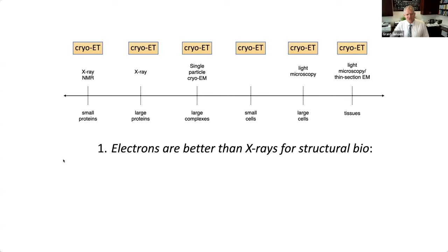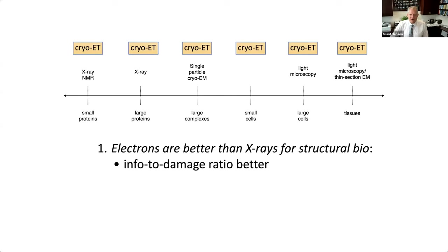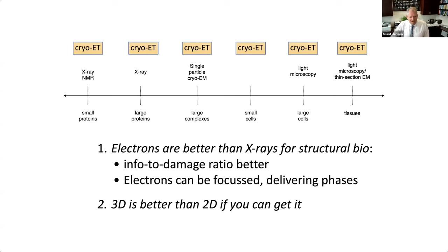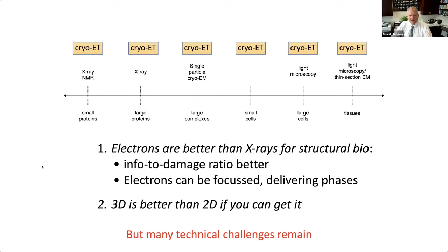The conclusion is: electrons are just better than x-rays for structural biology because the amount of information you get per damage - that ratio is better for electrons. Second, electrons can be focused, delivering phases, which is an enormous advantage. And 3D is always better than 2D if you can get it.